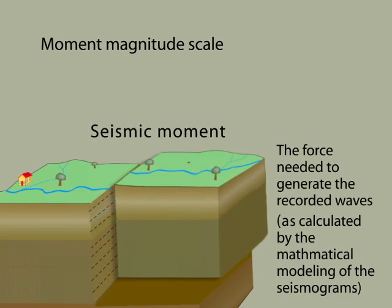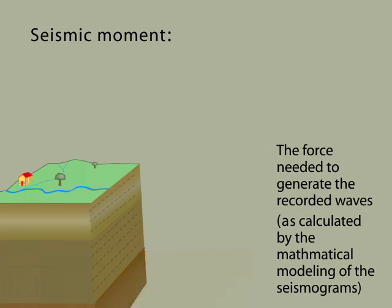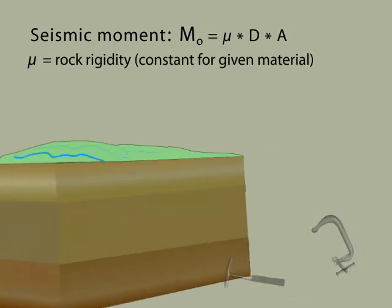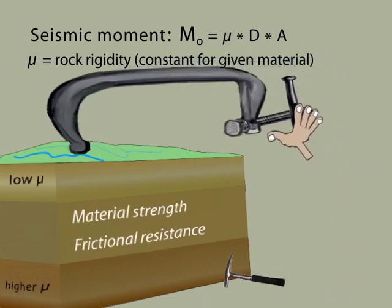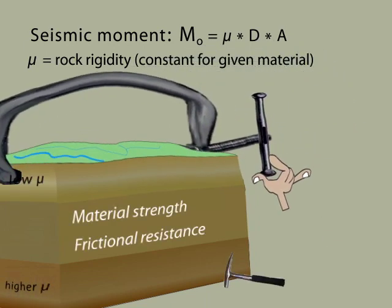The seismic moment, which defines how much force is needed to generate the recorded waves, is defined by this equation: Mu times distance times area. Mu is rock rigidity. It describes the resistance of the rock to bending when force is applied and is a constant for a given rock material.